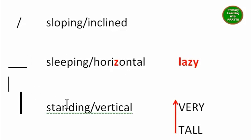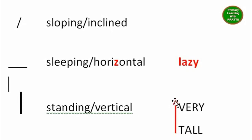How will you remember what is a vertical line? Vertical is a standing line — think of it as very tall. Vertical, very tall, standing line. Using these two keywords — sleeping for horizontal and very tall for vertical — you will be able to remember which is which.